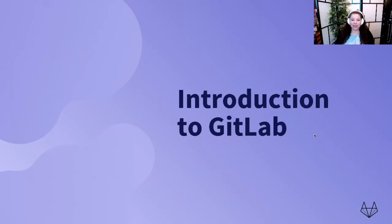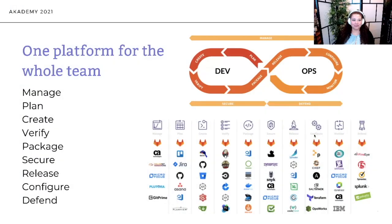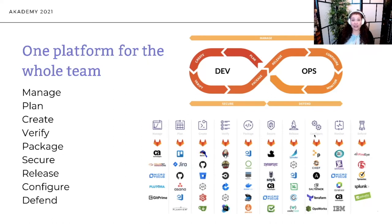GitLab is a single platform for the entire team, which means everybody can use GitLab. Instead of having different tools for different stages, you can consolidate onto a single platform. At GitLab we've identified stages like manage, plan, create, verify, package, secure, release, configure, and defend. Those are a whole lot of stages, and a whole lot of people need to be involved in deploying great quality enterprise software.